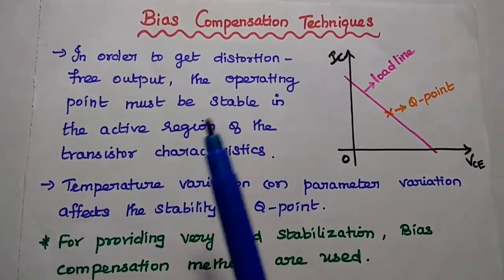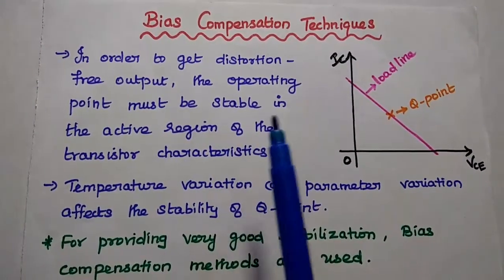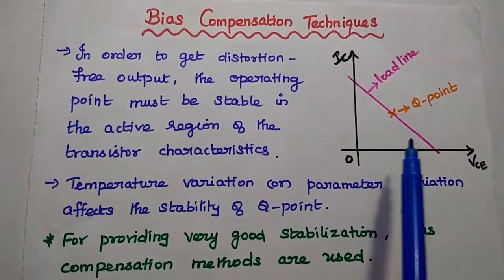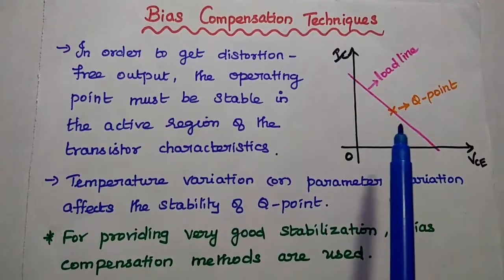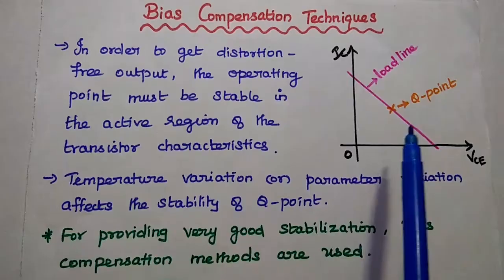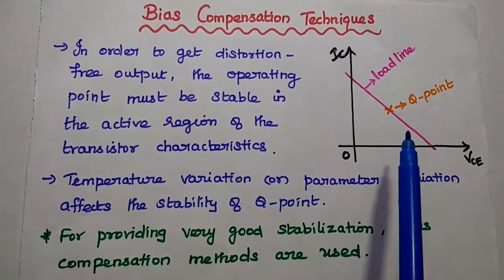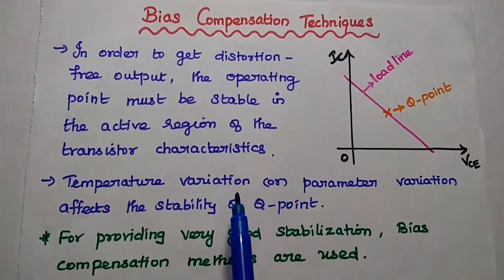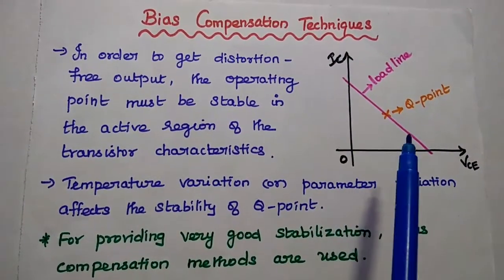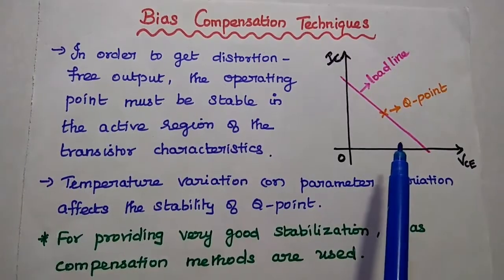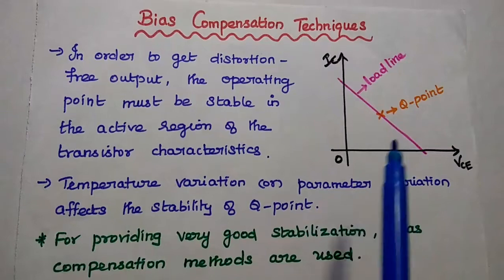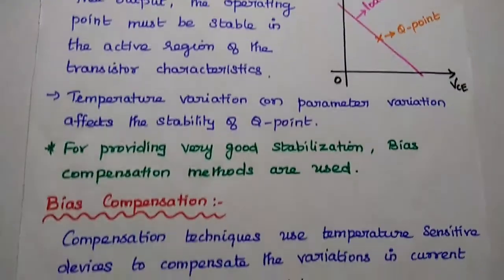Dear students, now we are going to discuss bias compensation techniques in detail. In any electronic circuits, the operating point must be stable in the active region of the transistor to get the maximum output without any distortion. Due to temperature variations or transistor parameter variations, the stability of the Q point is affected. In order to maintain the Q point stable, bias compensation techniques are used.